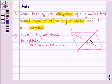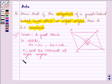Also all these four angles are of 90 degrees, that is AC and BD intersect at right angles and we have to show that quadrilateral ABCD is a rhombus.